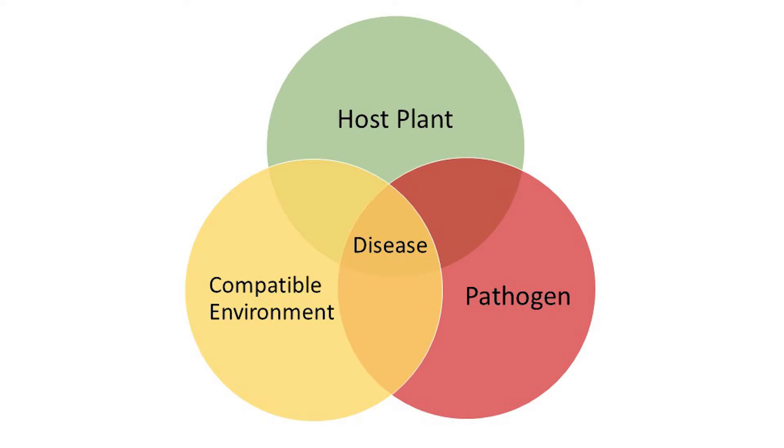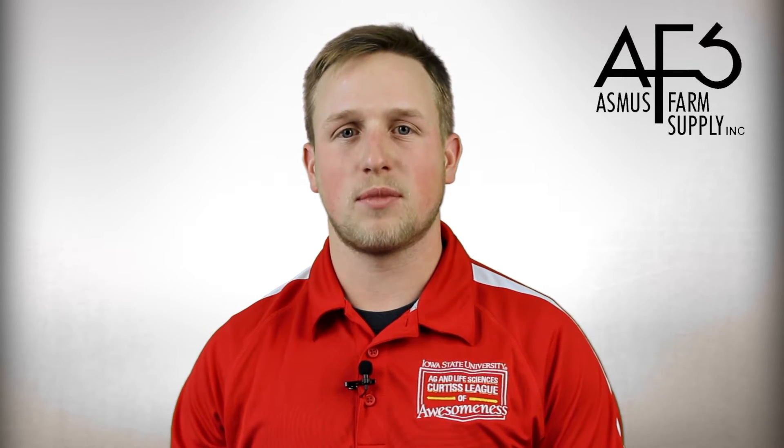In order for a pest or a pathogen to survive, there needs to be three components: the host plant, your pathogen, and a compatible environment. Since growers really don't have control over the climate or factors such as weather, seed treatment can be really important to help eliminate or suppress the effects of those external factors.